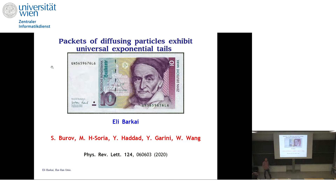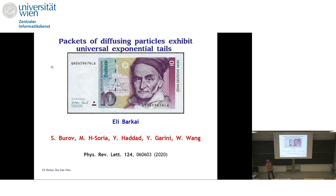This talk will be about diffusing particles that exhibit universal exponential tails, based on experiments and theory done by several groups. I want to start with Gauss and the famous bell-shaped Gaussian distribution that describes the spreading of Brownian particles. The first part of the talk is based on work with Tass Borov in this PRL.